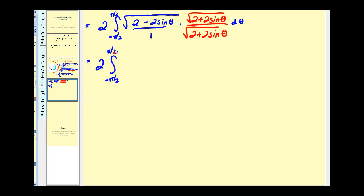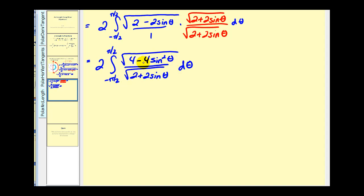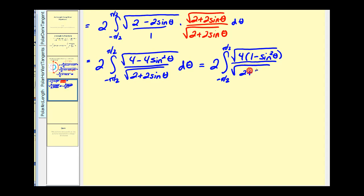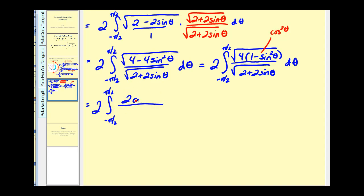Let's go ahead and find this product. The numerator is going to be the square root of 4 − 4 sin²θ. We can factor that as 4(1 − sin²θ), but 1 − sin²θ is the same as cos²θ. So our numerator becomes the square root of 4 cos²θ, which simplifies to 2 cos θ. Our denominator stays the same.